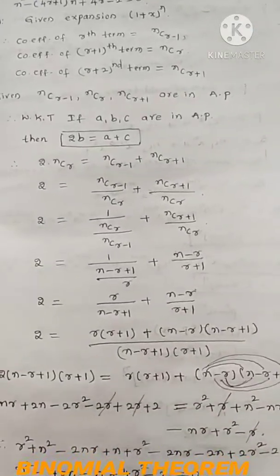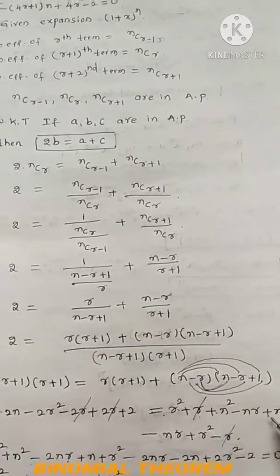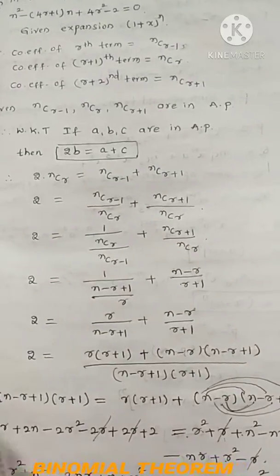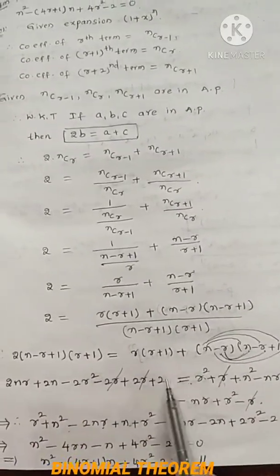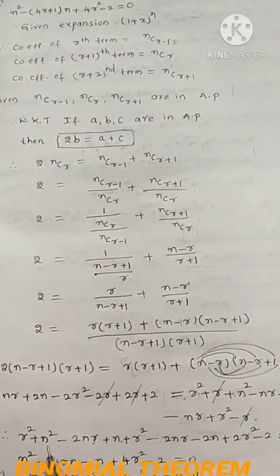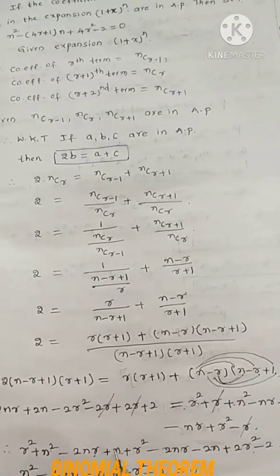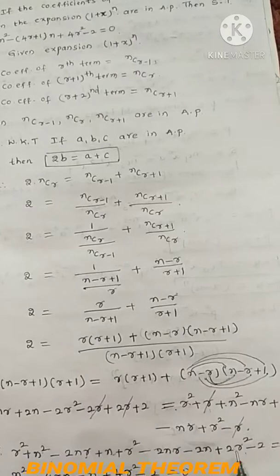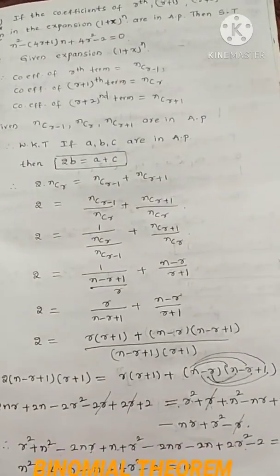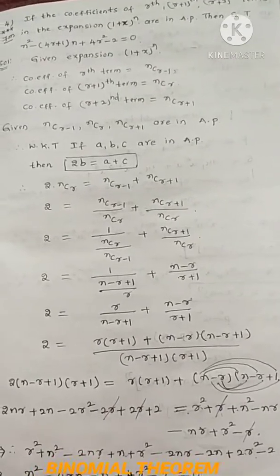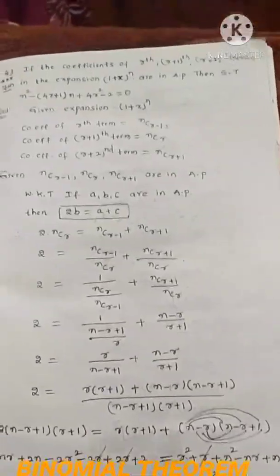Cross-multiplying: 2(n-r+1)(r+1) = r(r+1) + (n-r)(n-r+1). Expanding the left side: 2nr + 2n - 2r² - 2r + 2r + 2. Right side: r² + r + n² - nr + n - nr + r² - n + r. Collecting terms: n² - 4nr + 4r² - n - 2 = 0, which can be written as n² - (4r+1)n + 4r² - 2 = 0. This is the solution.